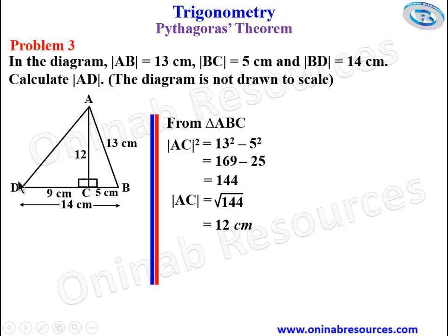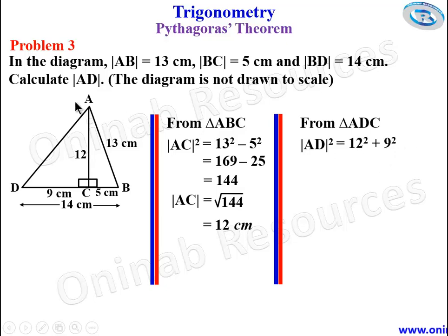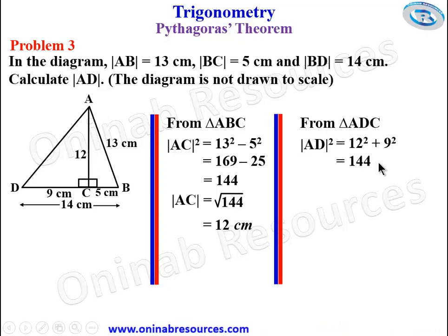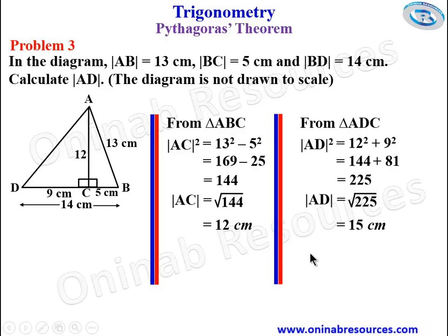AD is the hypotenuse in triangle ADC. So AD squared equals 12 squared plus 9 squared: 144 plus 81, giving 225. Therefore AD is the square root of 225, which gives 15 centimeters. We are done with problem 3.